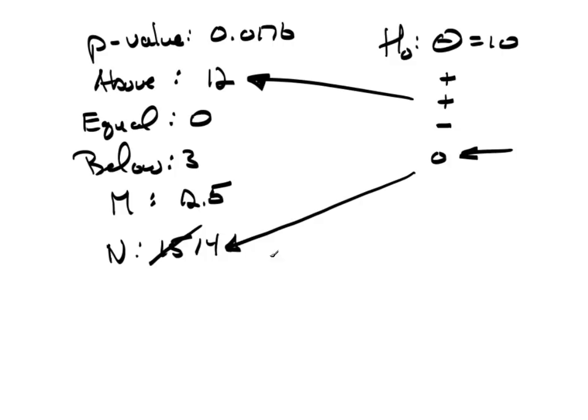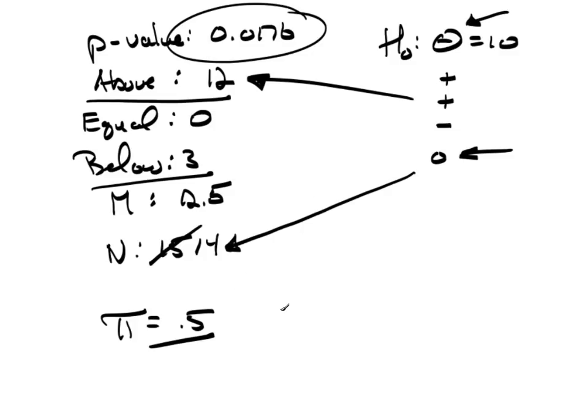Now, when this is all done, this is nothing more than a binomial probability. We're looking at 12 above, 3 below. Well, the probability of being above or below is 0.5. Because we're using the median. And then this p-value is really nothing more than a binomial probability.